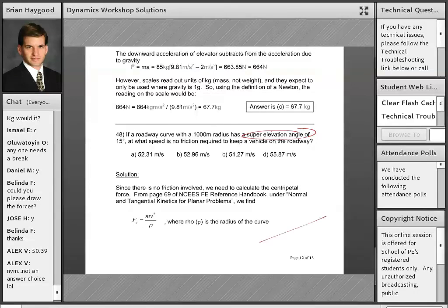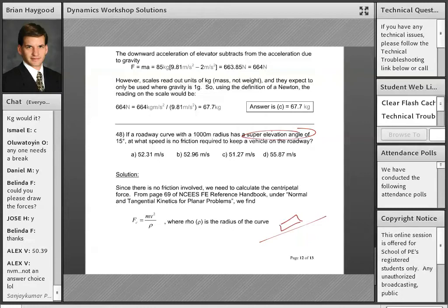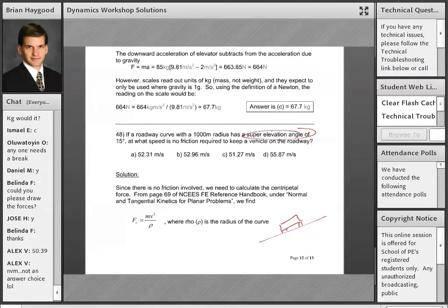We're looking at the back of the car as it drives around the circle. It's curving to our left as I've drawn it, and you can call this a super elevation angle of 15 degrees. That's the term usually used by transportation engineers.